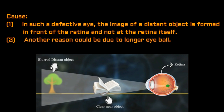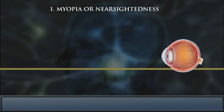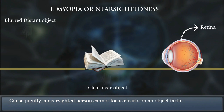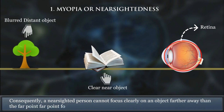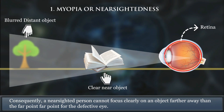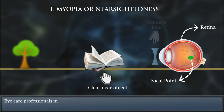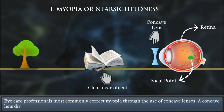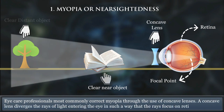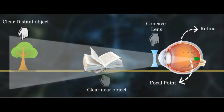Another reason could be due to longer eyeballs. Consequently, a nearsighted person cannot focus clearly on an object further away than the far point of the defective eye. Eye care professionals most commonly correct myopia through the use of concave lenses.